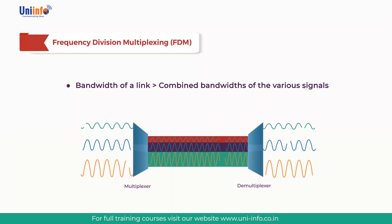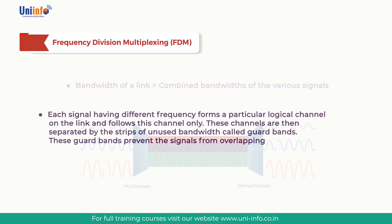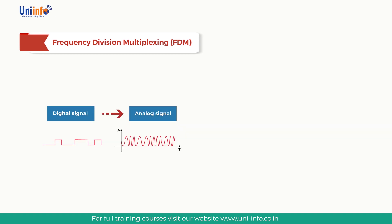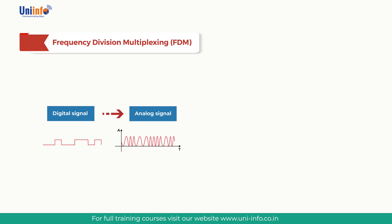FDM gives a total bandwidth greater than the combined bandwidth of the signals to be transmitted. In order to prevent signal overlap, there are strips of frequency that separate the signals — these are called Guard Bands. In FDM, signals to be transmitted must be analog signals; thus, digital signals need to be converted to analog form if they are to use FDM.